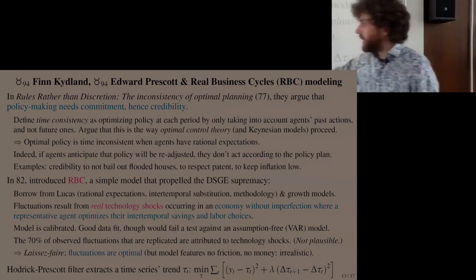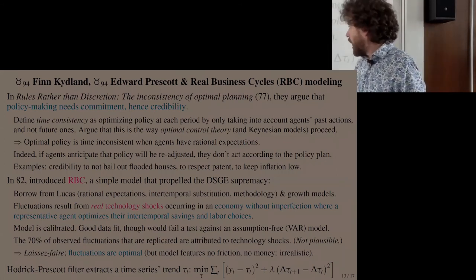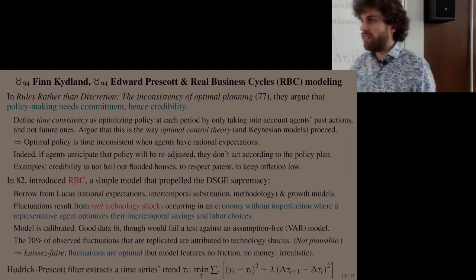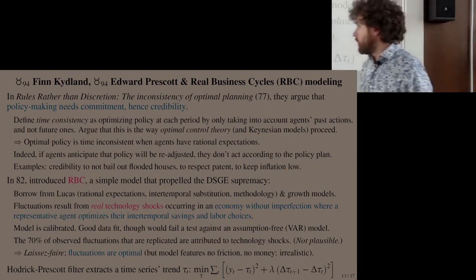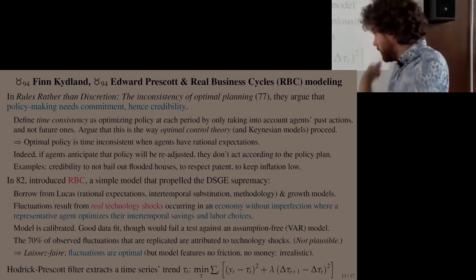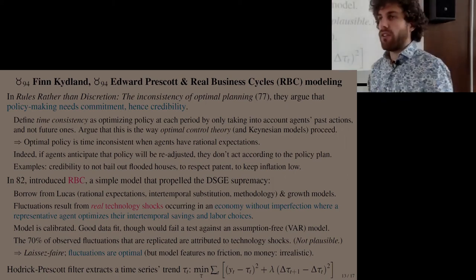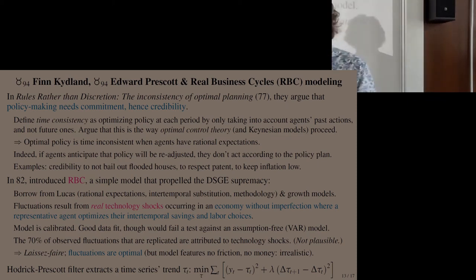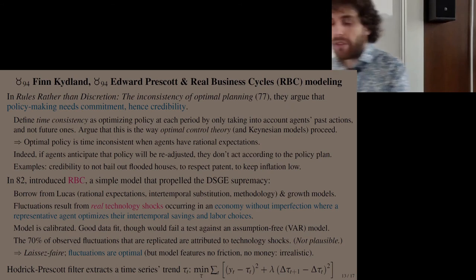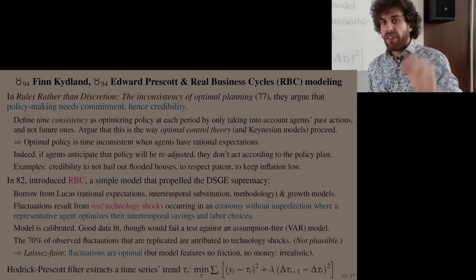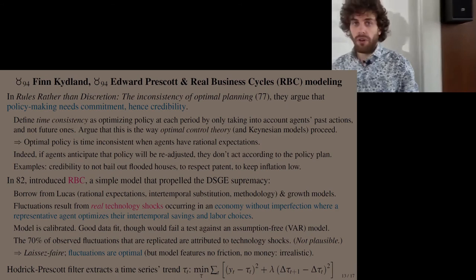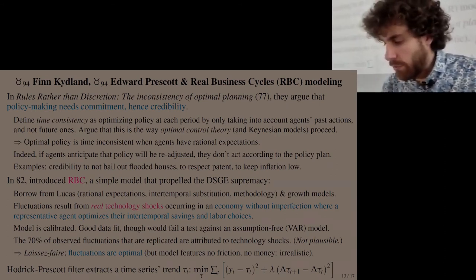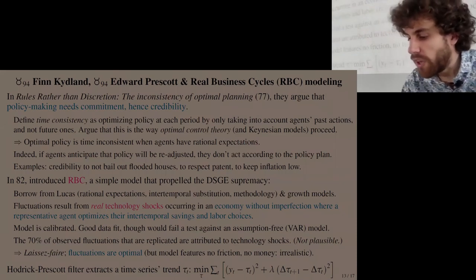Lambda is given a value that depends on the data frequency. For quarterly macroeconomic data, a common value is lambda = 1600, which they found gives the right result. The HP filter has been criticized and some prefer to use moving averages instead, but it's a commonly used method to extract the trend.